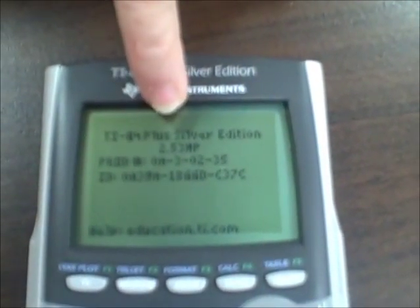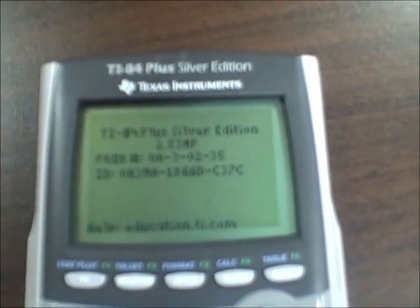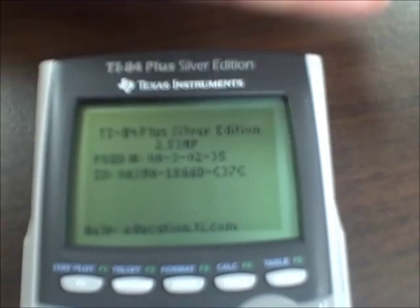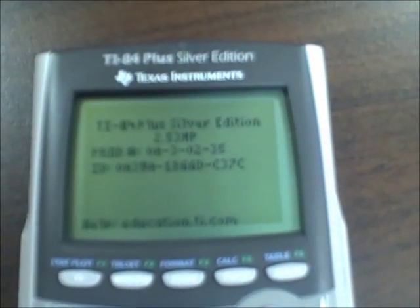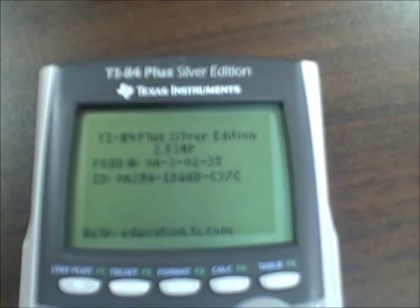So 2.53 MP is the newer operating system for the 84, so we're set there. If I ever have to have service on this calculator, TI is going to ask me this information, product number and ID number, and that's where you find it. So this one's ready to go.